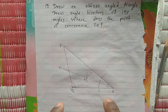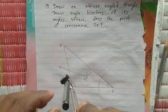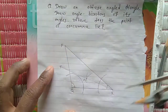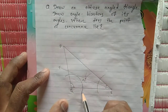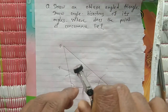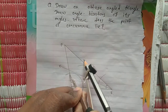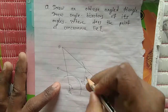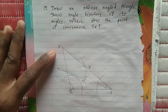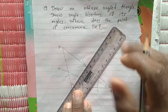Now we bisect angle Q. Draw intersecting arcs which intersect both arms of angle Q. Then take a distance greater than half in the compass and draw arcs here. The same way, at the other point draw another arc which intersects the first arc. We get a point — name it as B. We join Q and B.